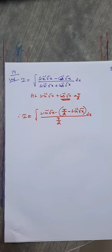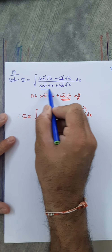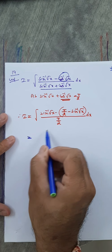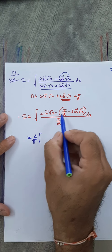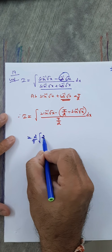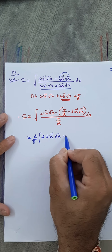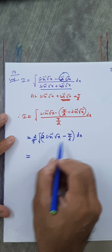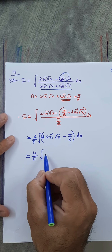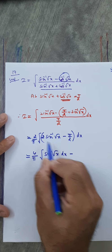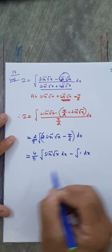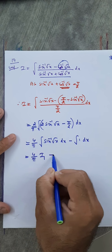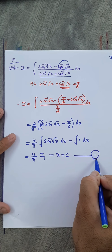Taking 2/π outside, and simplifying: twice sin⁻¹√x minus π/2. Splitting into two integrals, this gives (4/π) times integral of sin⁻¹√x dx, which we call I₁, minus integral of 1 dx, which equals x. So I = (4/π)·I₁ − x plus c.